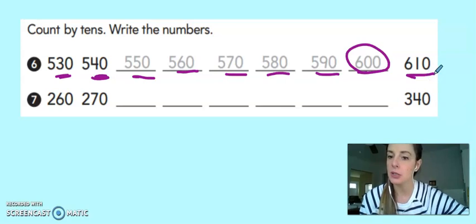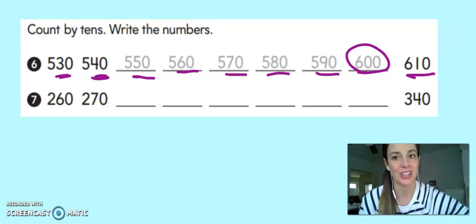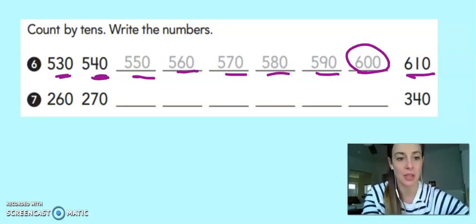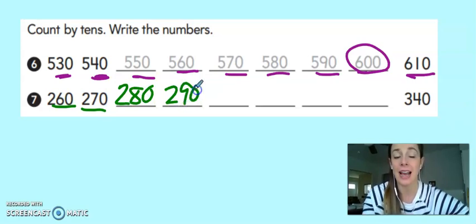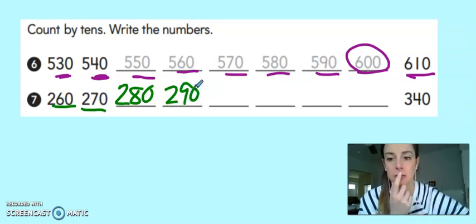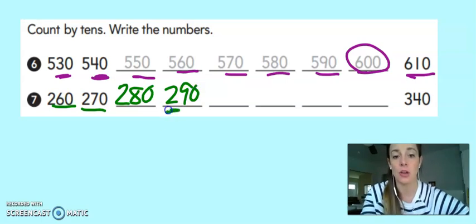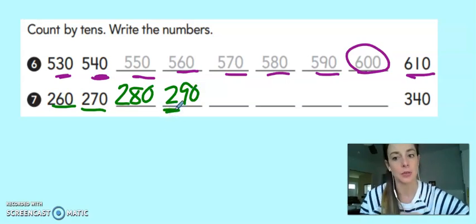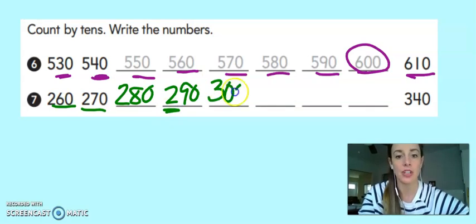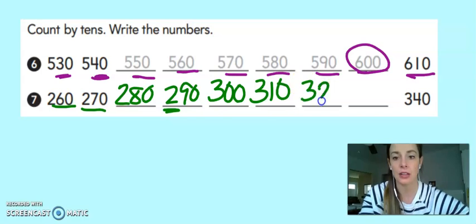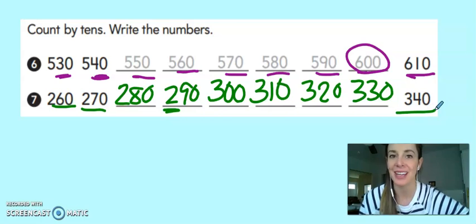This one's a little bit tricky because I am going to jump to a new 100, but I need to change it on my lines. Let's try this one. 260, 270. Let's keep counting. 280, 290. Oh, 90 plus 10 more. That gives me a new 100. I used to have 200s. Now I've jumped to 300. Then 310, 320, 330. And the last number they give me is 340.